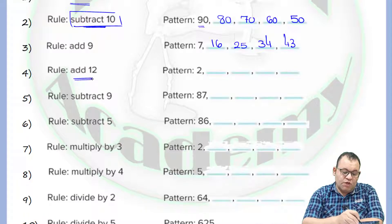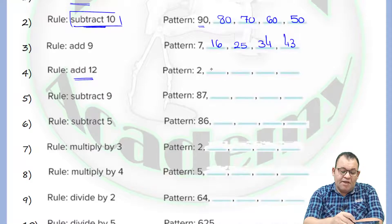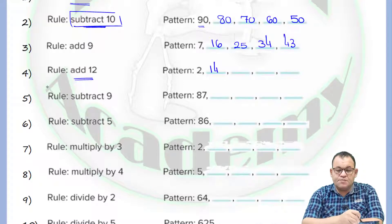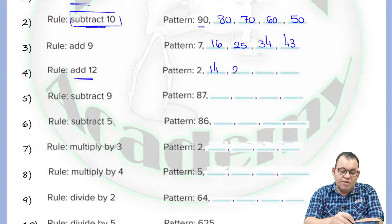If we need to add 12, then we start with 2. By adding 12 it will be equal to 14. If you add one more 12 it will be equal to 5.